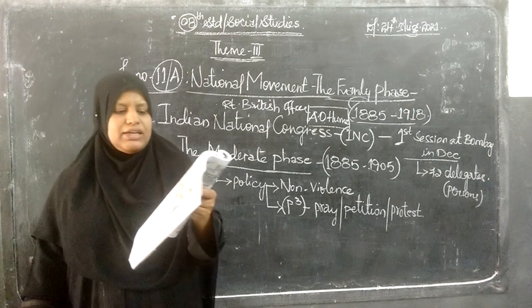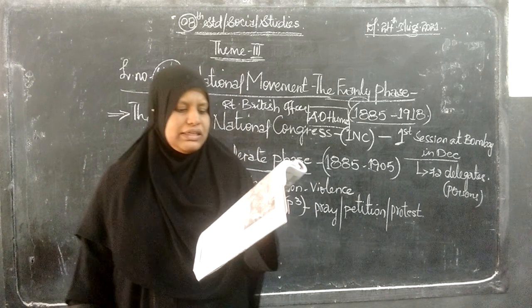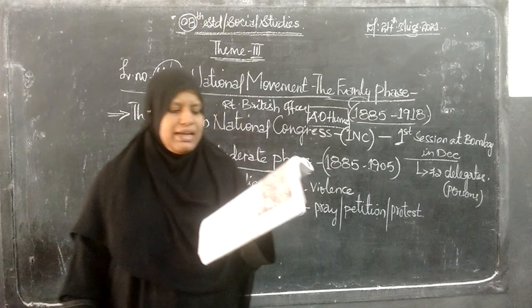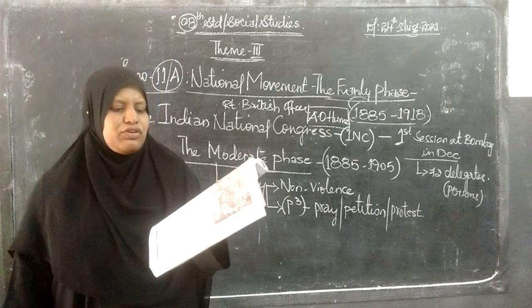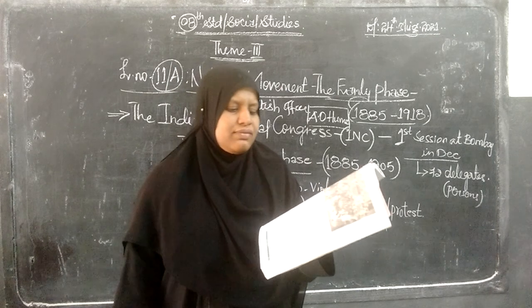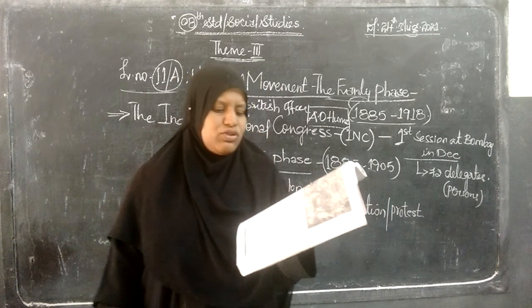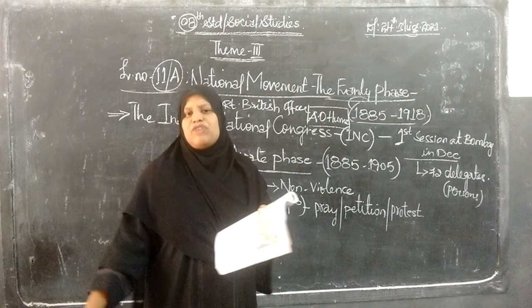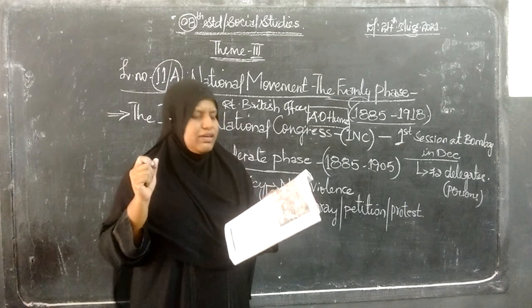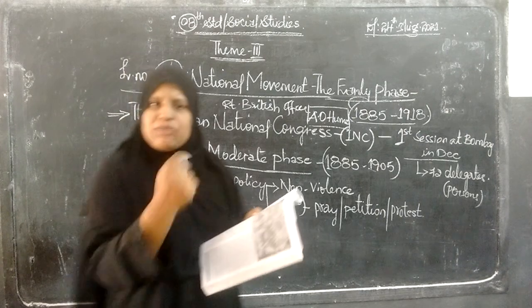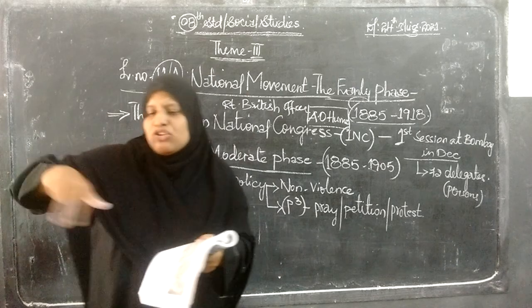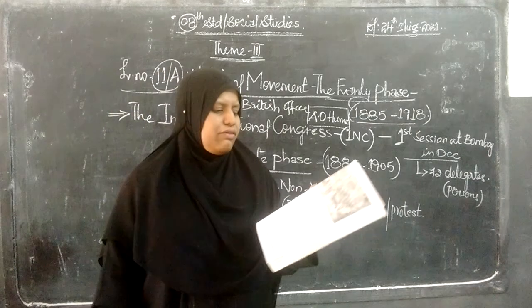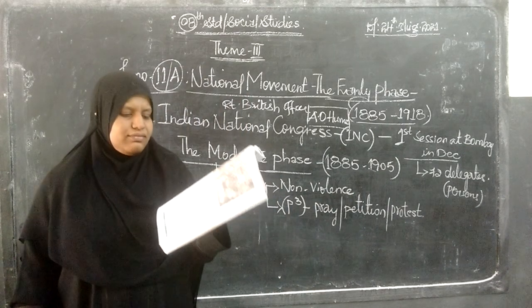The second major objective of the Congress was to create a common political platform around which political workers in different parts of the country would gather, educating and mobilizing people on an all-India basis. This was accompanied by taking up those grievances and fighting for those rights which Indians had in common in relation to their rulers. They studied the grievances of the people and worked to educate the people about their political rights.